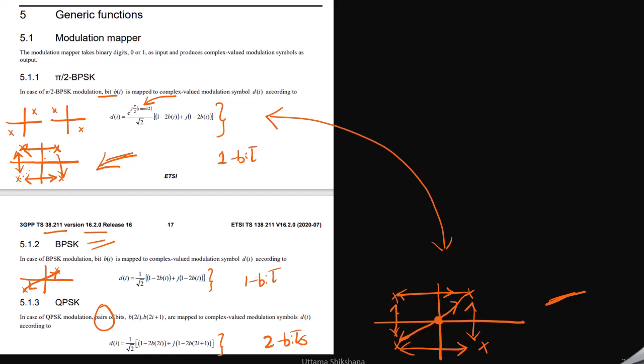Let me talk about one more difference. π/2 BPSK is mainly giving an advantage with respect to designing relaxed power amplifier, but these two will not give much benefit.